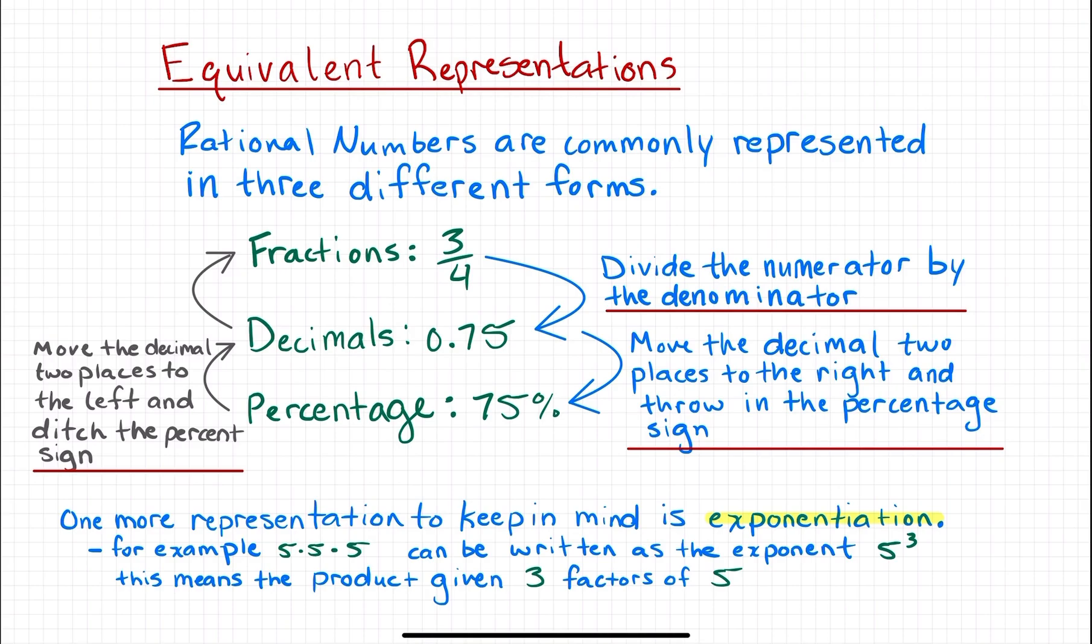To convert a fraction to a decimal, take the numerator and divide it by the denominator. So if you do long division, 3 divided by 4, you get 0.75. To convert that decimal to a percentage, move the decimal point two places to the right and add a percentage sign.